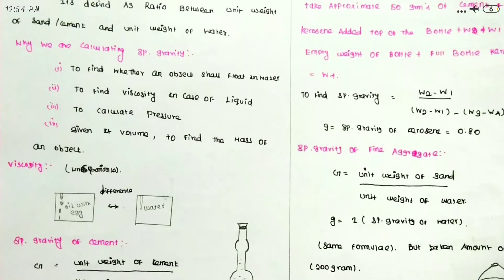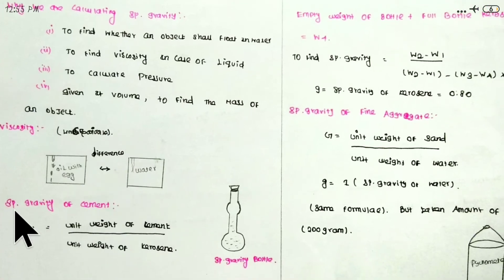The most important is viscosity. Viscosity measures how thick a liquid is. For example, oil versus water - the water speed is very low, it flows very slowly, and the resistance will be the viscosity. Now, for cement, we use the unit weight of cement and the unit weight of kerosene.